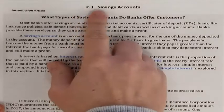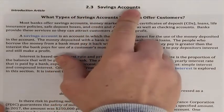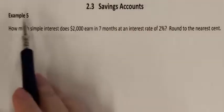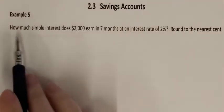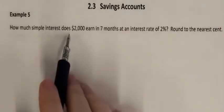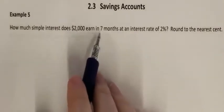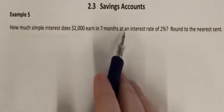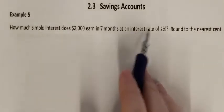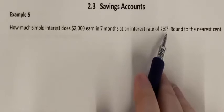Section 2.3 Savings Accounts. Sample 5. How much simple interest does $2,000 earn in 7 months at an interest rate of 2%?